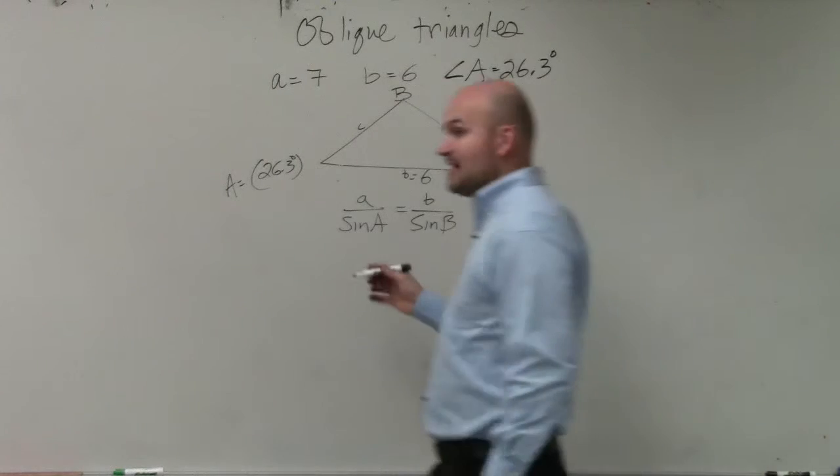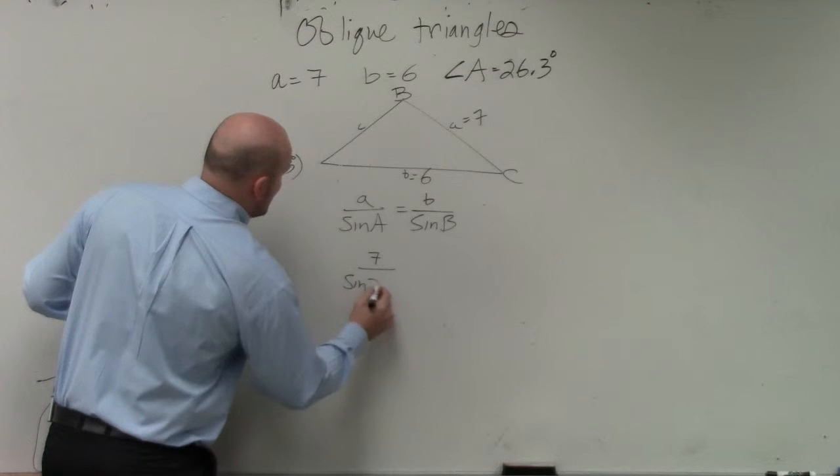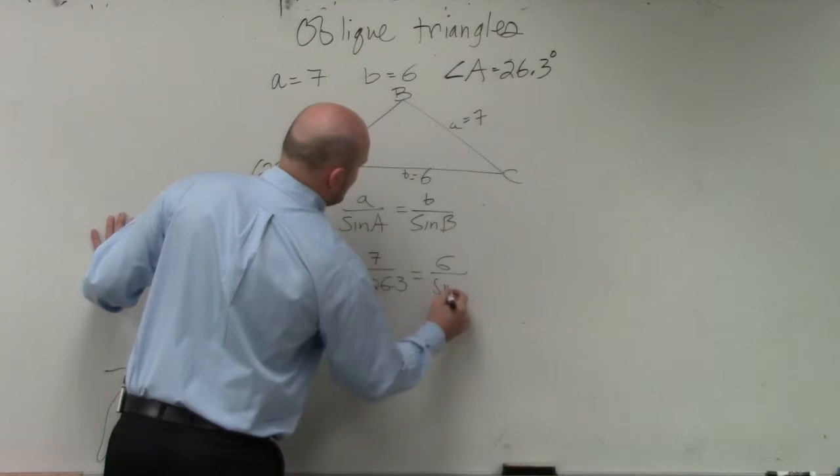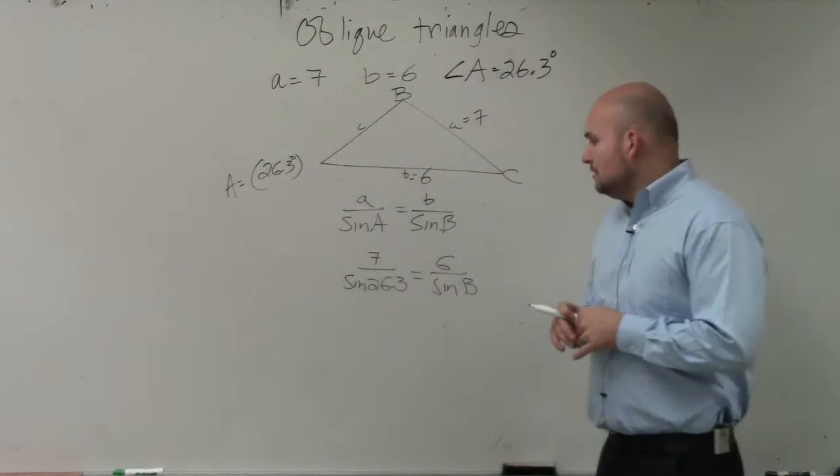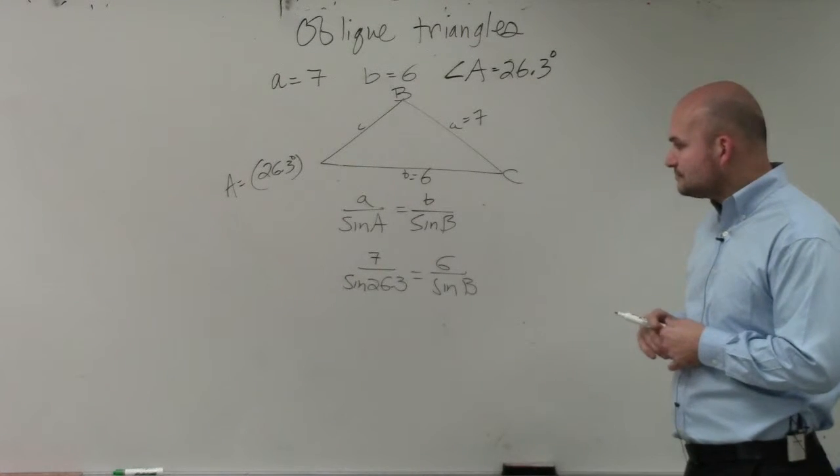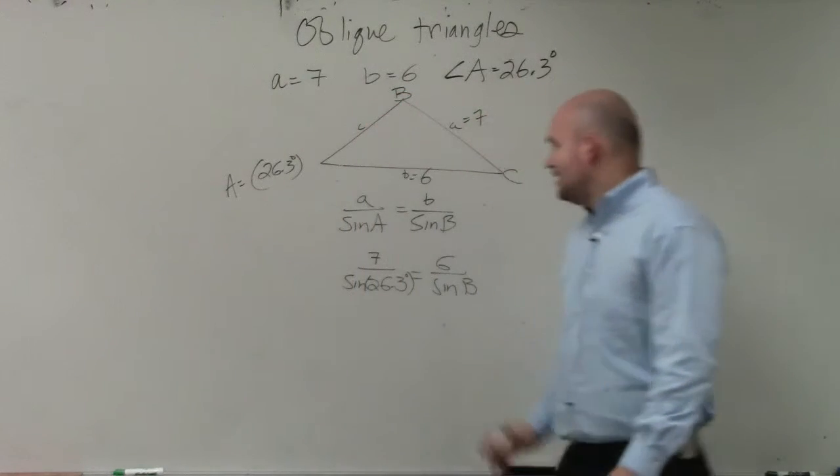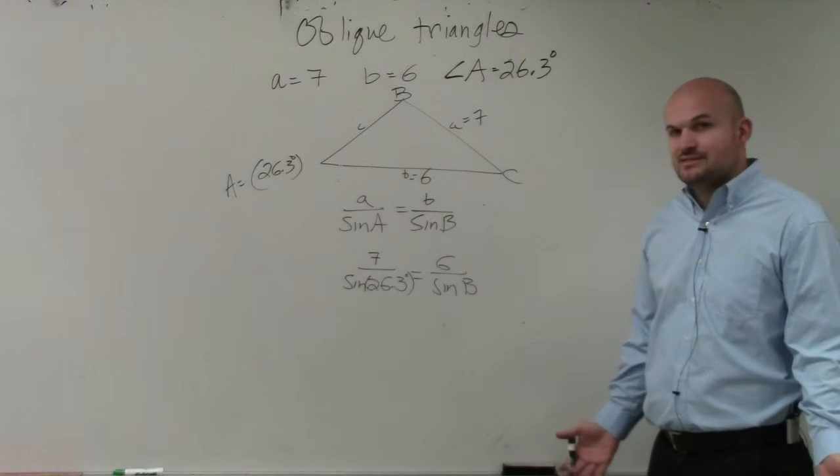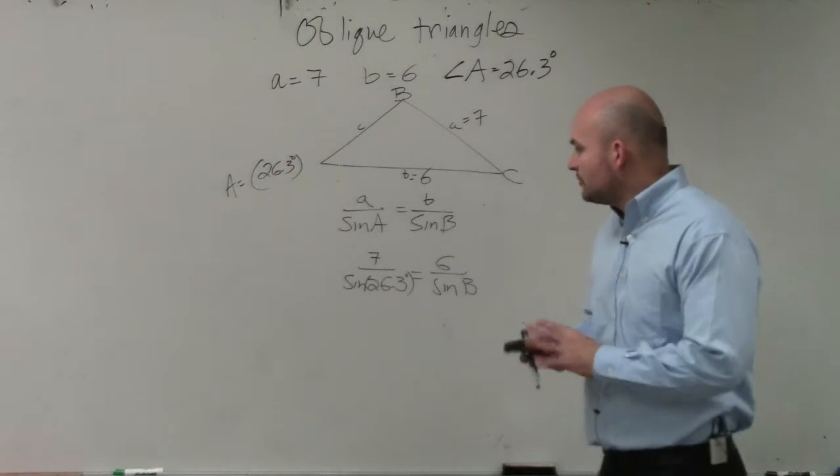So now let's just plug in the values. We're going to have 7 over the sine of 26.3 is equal to 6 over the sine of B. Now there's a lot of different things you guys could do here. You could easily cross multiply, which I know some of you love to do. But in reality, it's not going to be any different, any faster to be doing one way or the other.